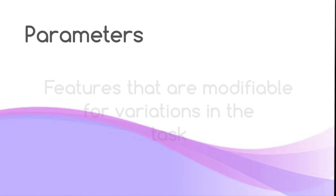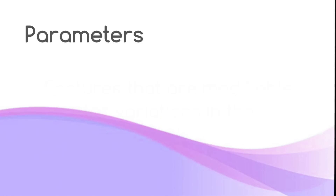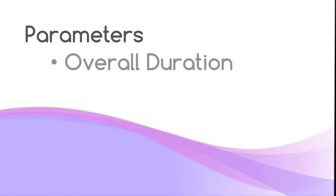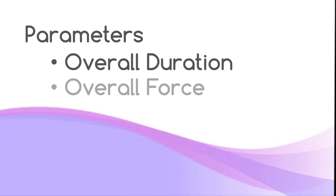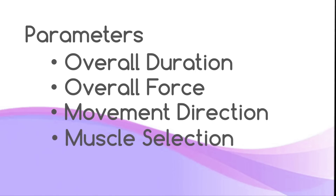The parameters, on the other hand, are features that are modifiable for variations in the task. The four parameters are overall duration, overall force, movement direction, and muscle selection.